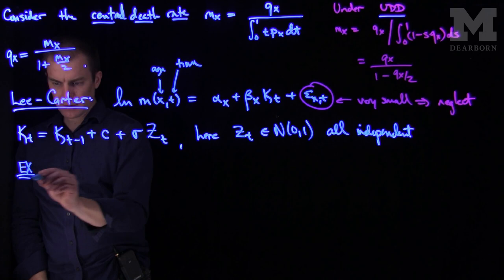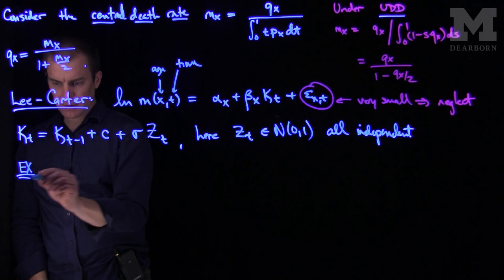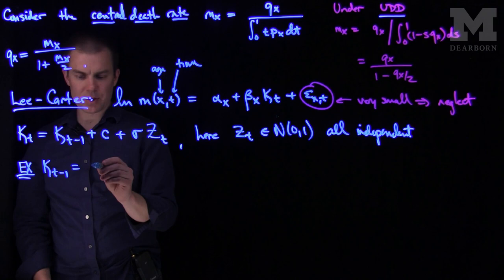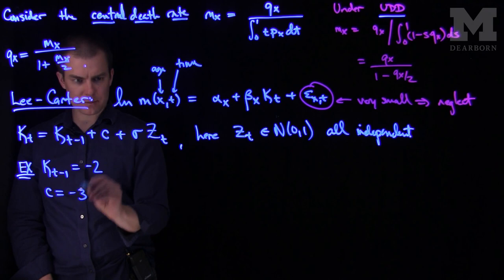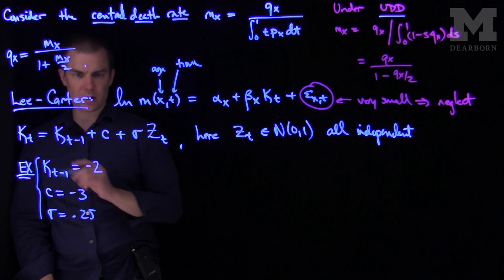So say for example, as an example of this, let's suppose that k of t1 was just a constant, equal to negative 2. And let's say that c was maybe negative 3 and sigma was 0.25.